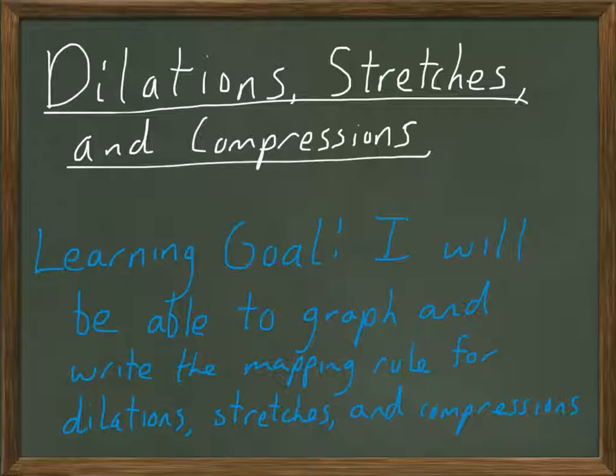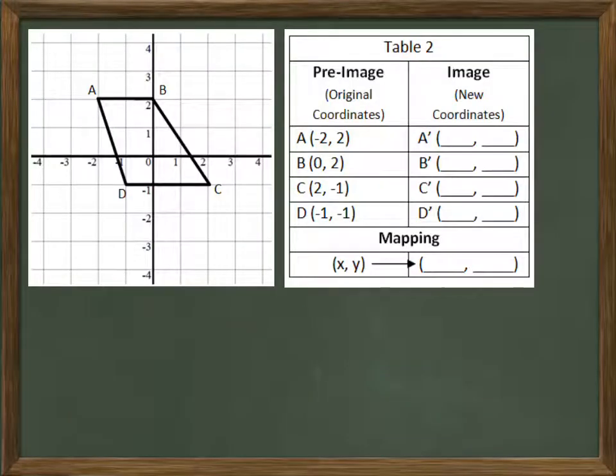This is continuing in our series on transformations. We've already discussed translations, so now let's talk about these. For a translation, our mapping rule looks something like x plus 3 and y minus 2. We were adding or subtracting something from the x and y coordinates.